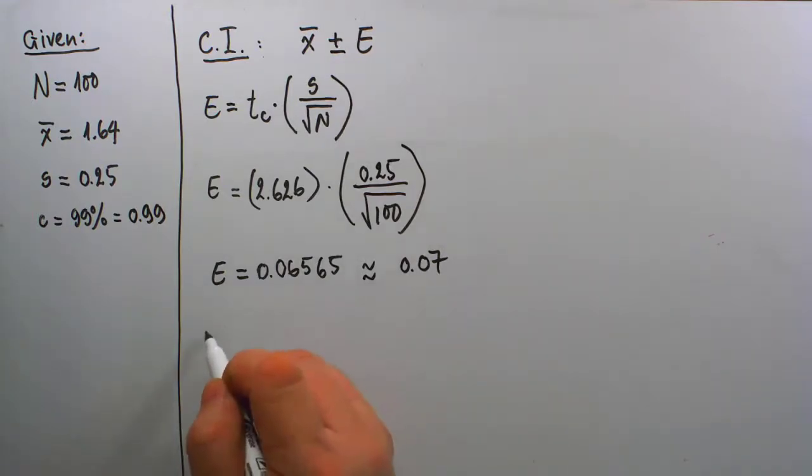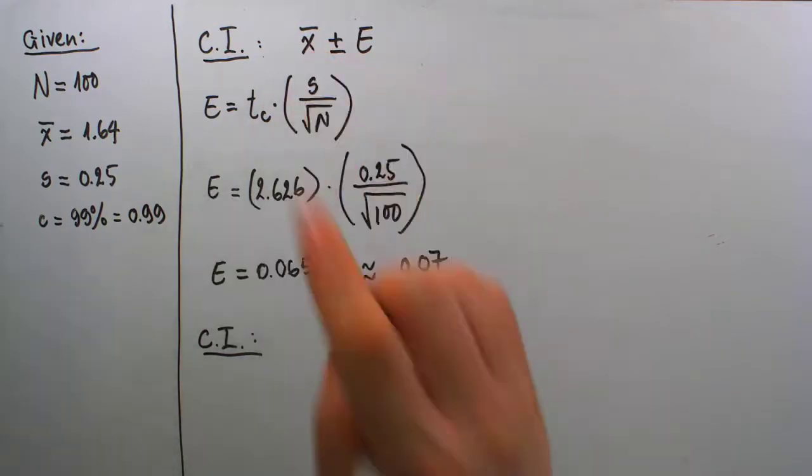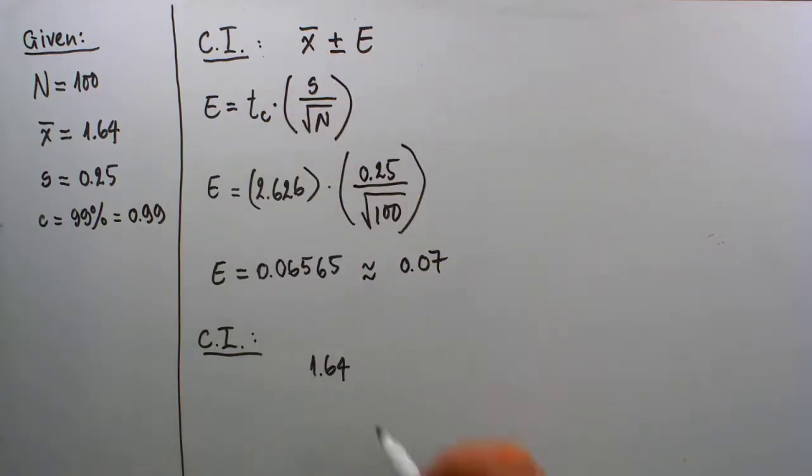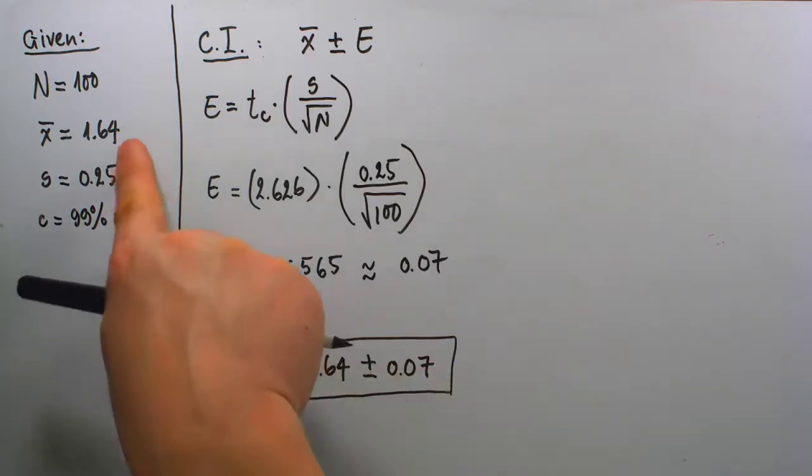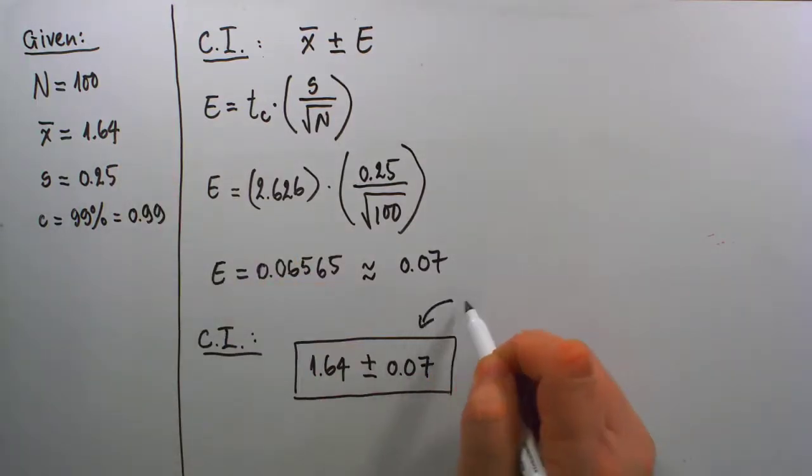Now our final confidence interval is ready. From where our sample mean is at $1.64, I'm going to add and subtract the margin of error we just found, 0.07. That's how we get our confidence interval: 1.64 ± 0.07. In practical terms, this says that on June 1st, 2020, the national mean gas price is guaranteed at 99% confidence level to be inside this interval, simply up and down by 7 cents from our sample mean of $1.64.